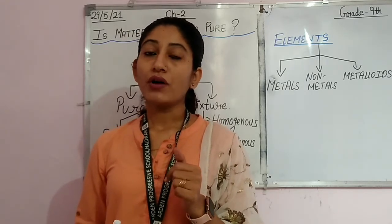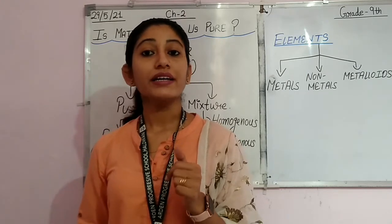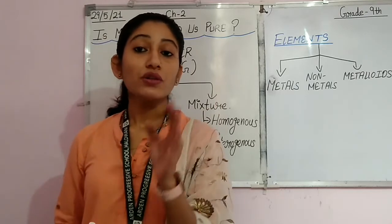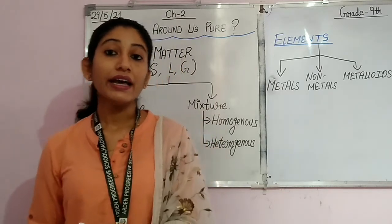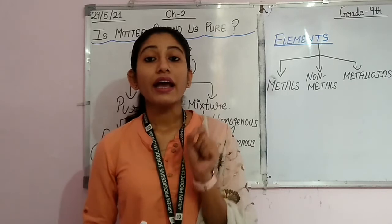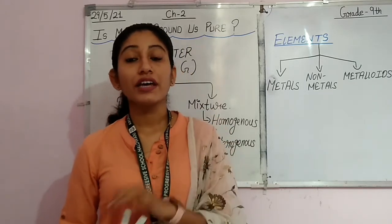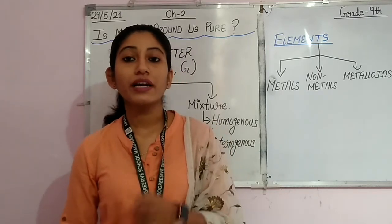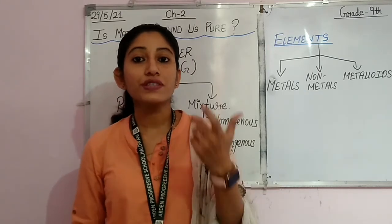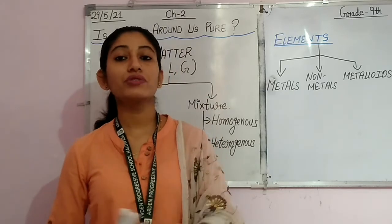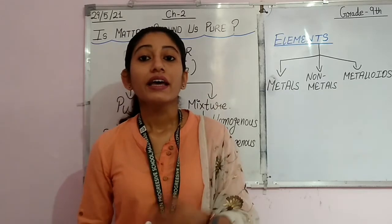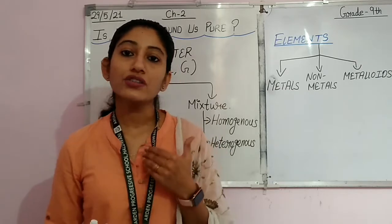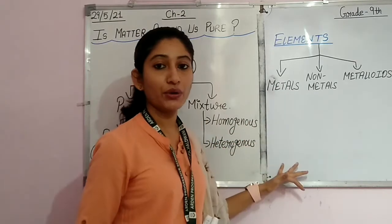Another property related to metals is that metals lose electrons and they have a positive charge — they form cations. Metals have a property of losing electrons and after losing electrons they get a positive charge and are called cations. These are all the properties related to metals.